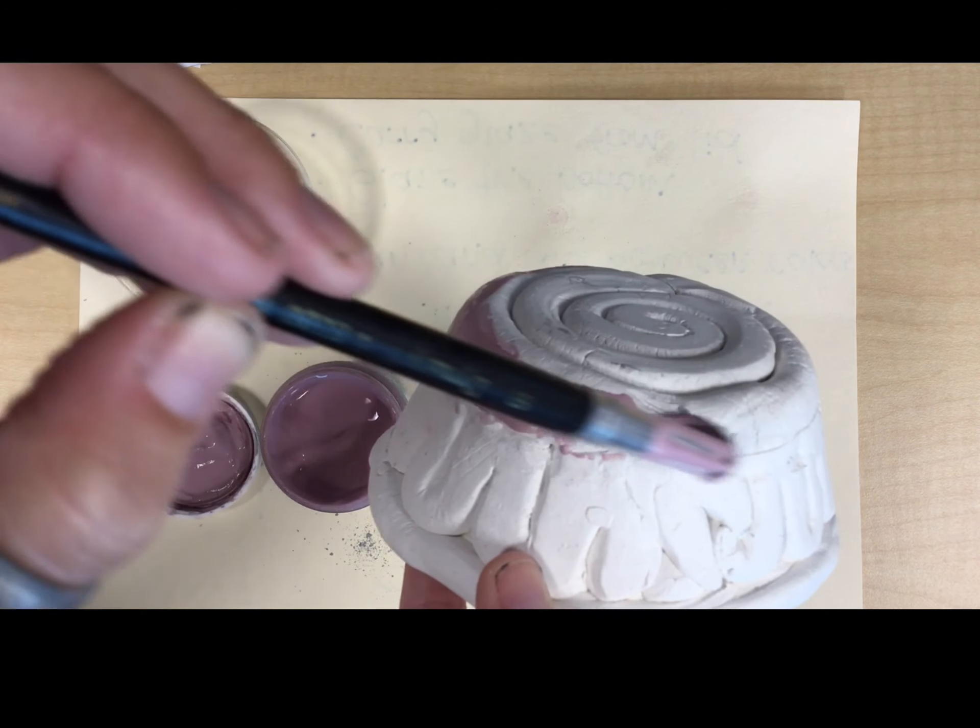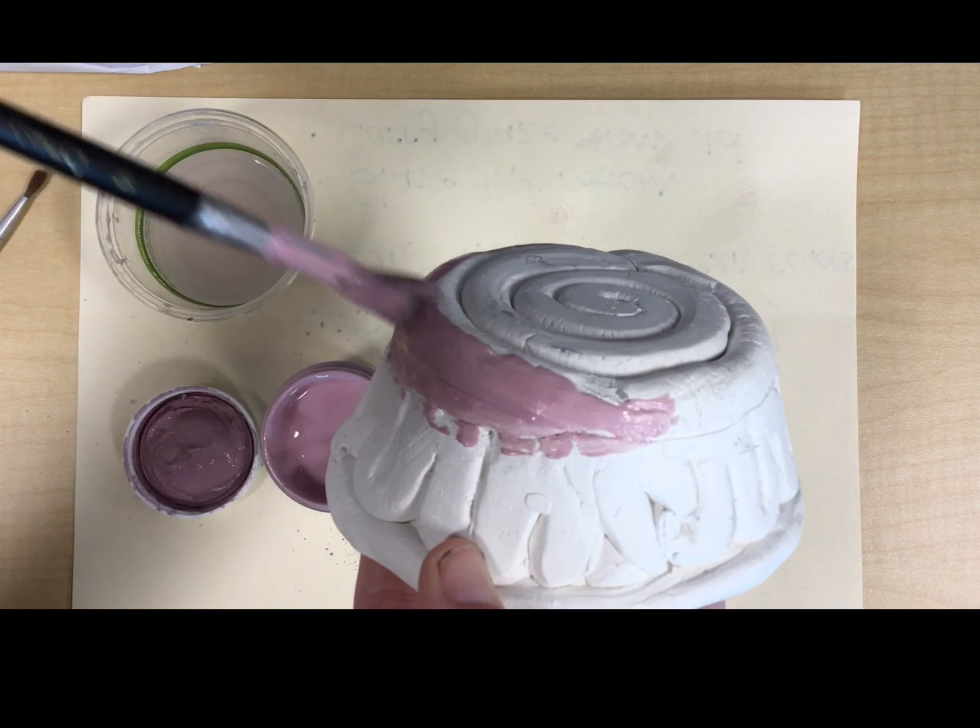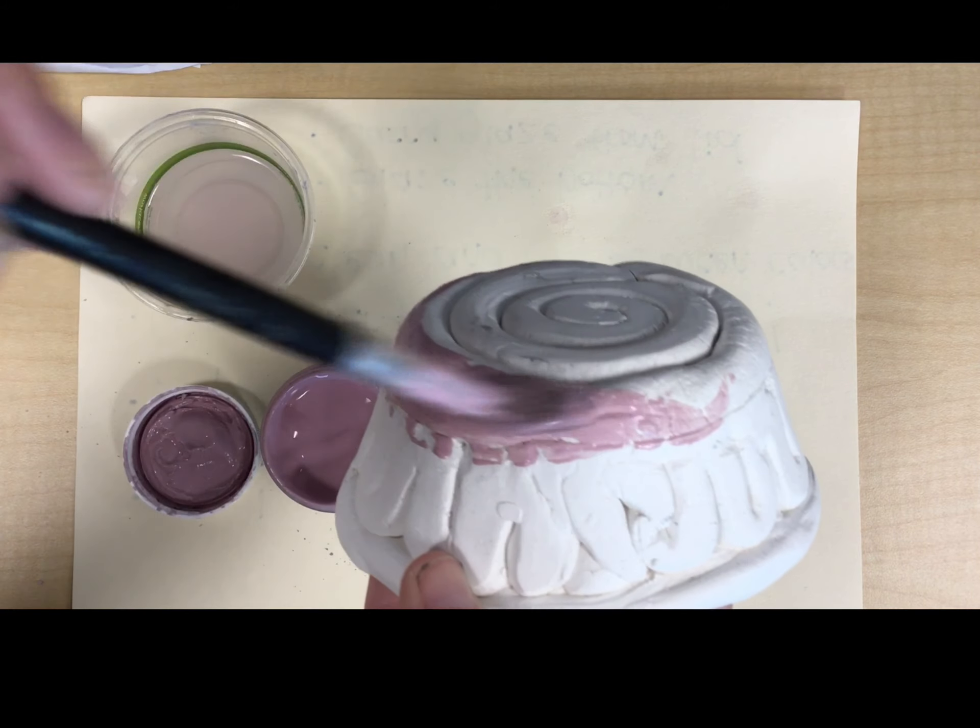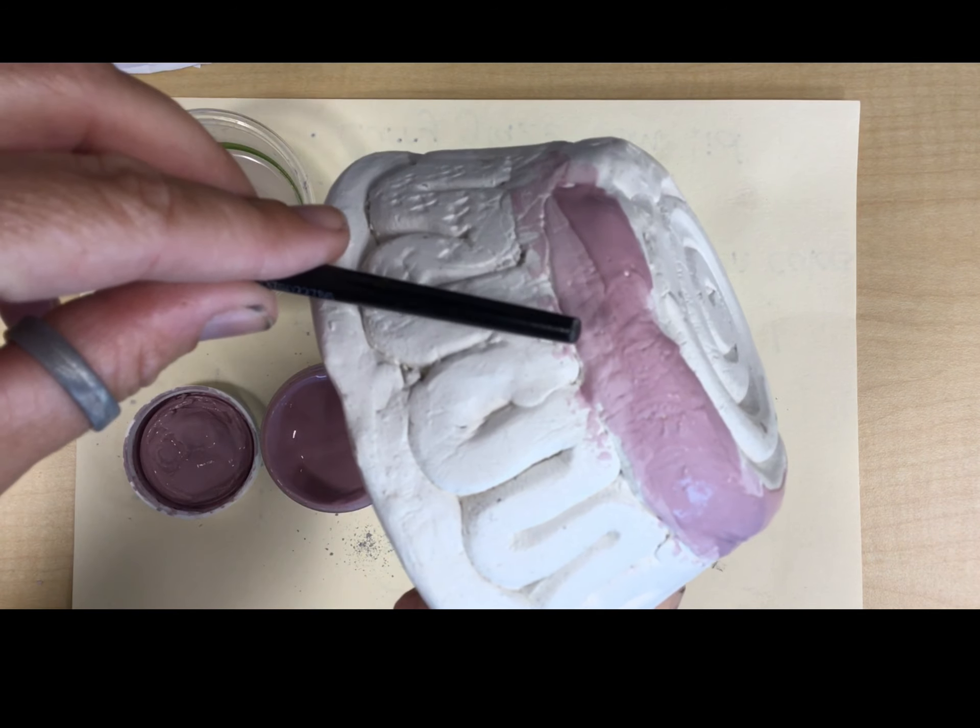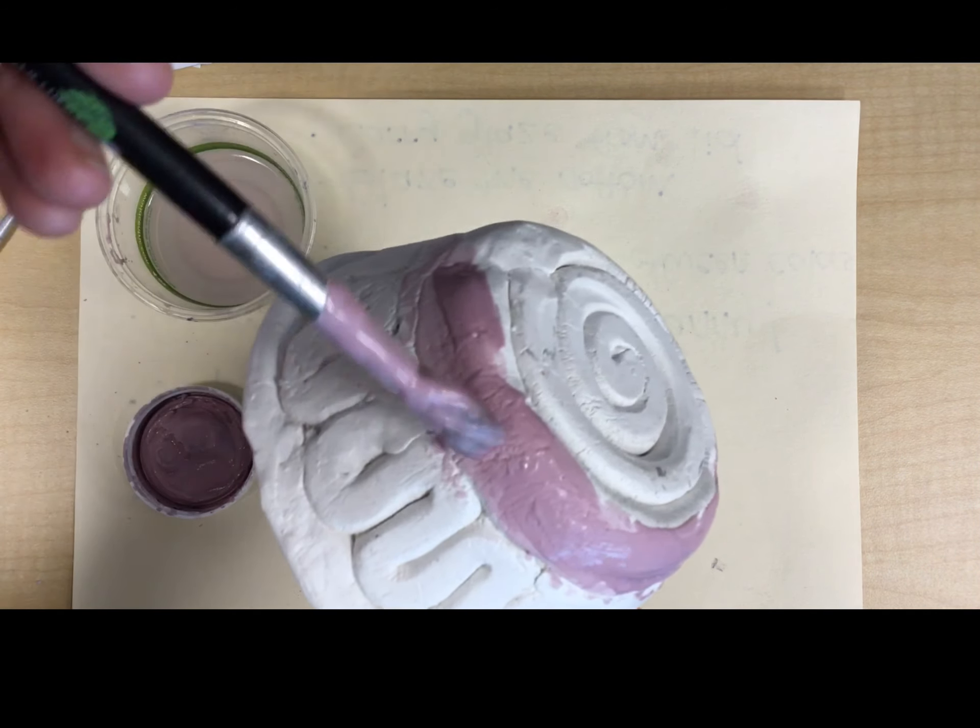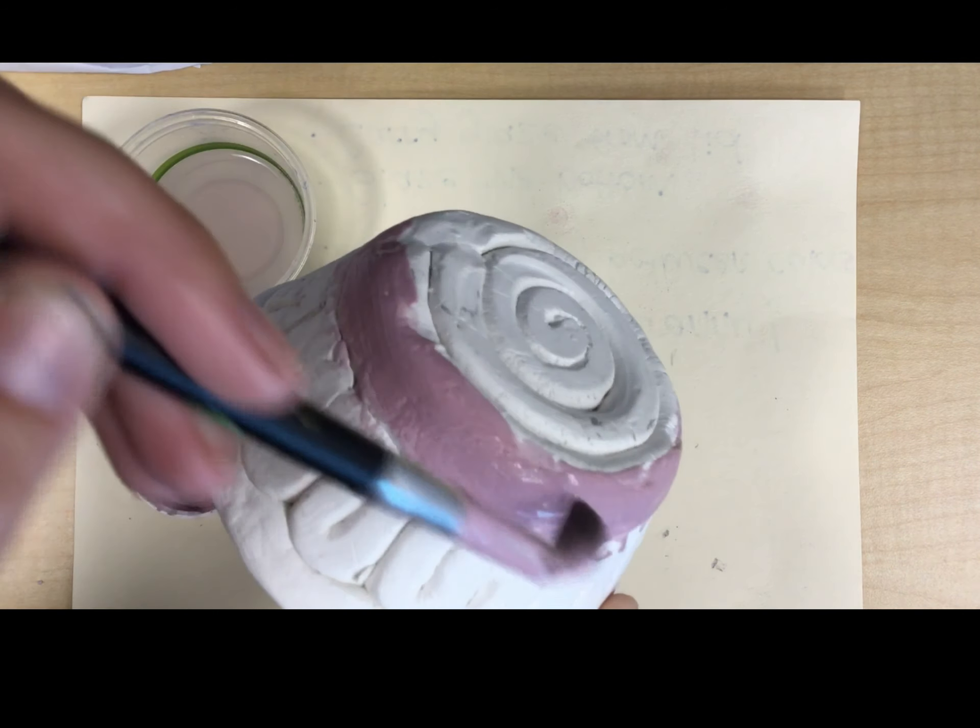So you're just looking to do maybe one thick-ish coat, maybe two light coats, and it dries pretty fast. You'll start seeing the difference in the colors as it starts to dry. Okay, so that's how we're going to glaze.